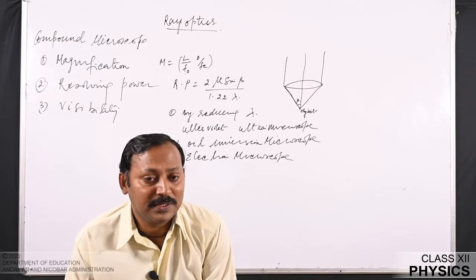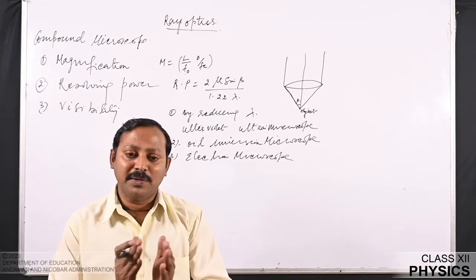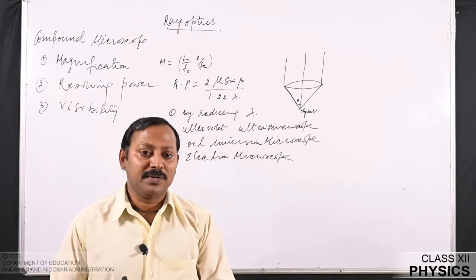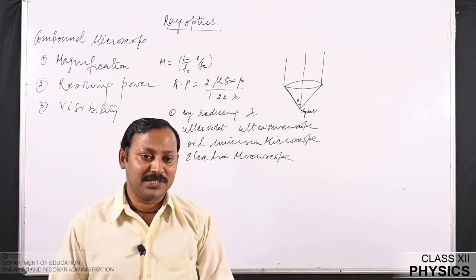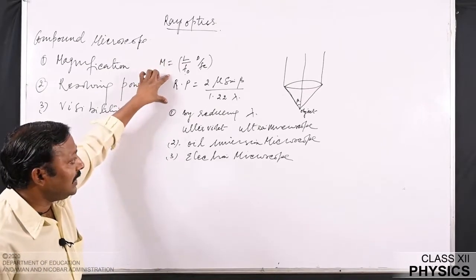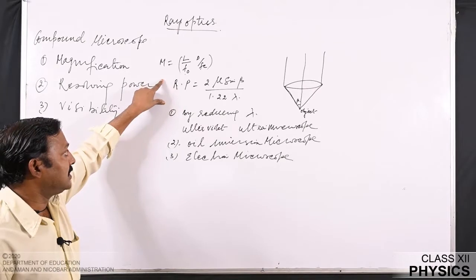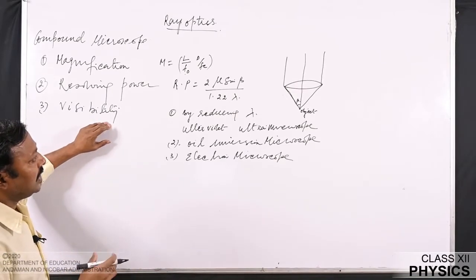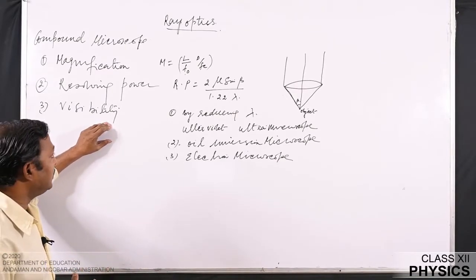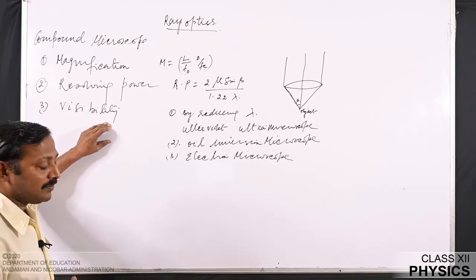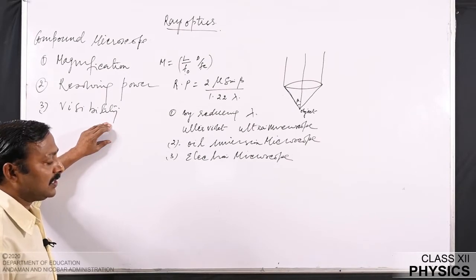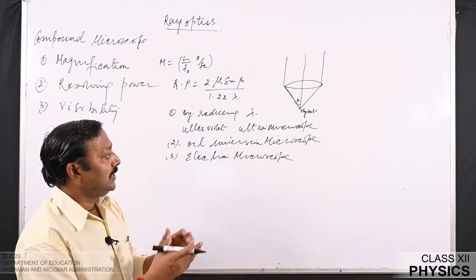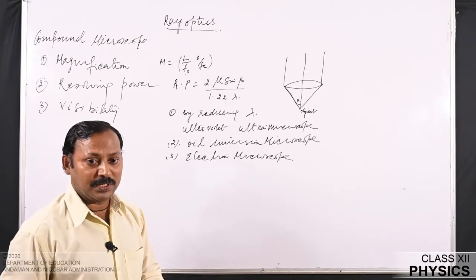Chromatic aberration is the deviation from the actual formation of image by a point object due to the presence of several colours; these several colours form several images, and because of that the clarity of the image cannot be realized. By taking several sets of lenses, chromatic aberration can be removed. The third factor is visibility: more light and brightness is required to see the microorganisms, and that can be achieved by using concave mirrors which reflect light towards the object, thereby providing proper light intensity to view the objects clearly.